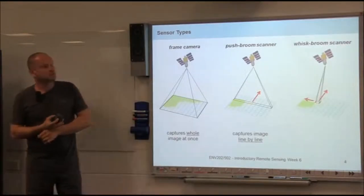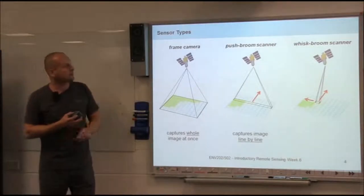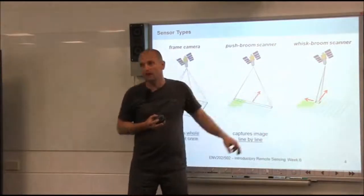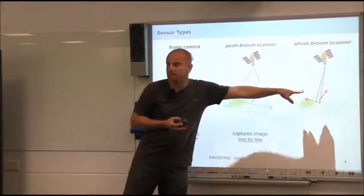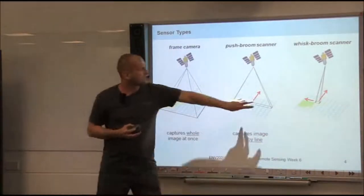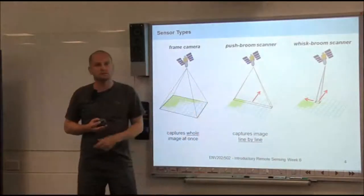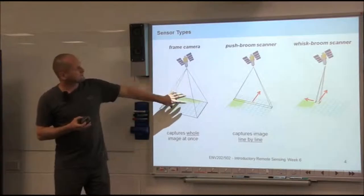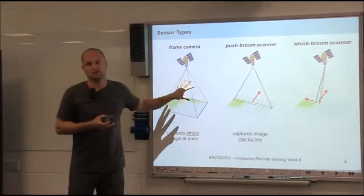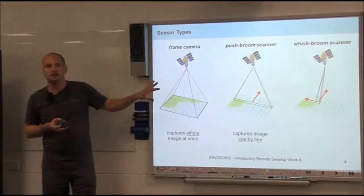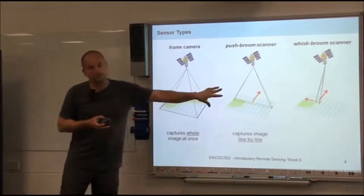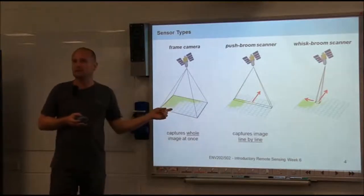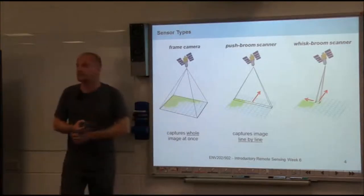And then a third variety is a whisk-broom scanner. It captures one pixel at a time and sweeps across the image, and through the forward movement of the sensor, it captures the whole image. These are the most used types of sensors in remote sensing. This type is used for digital aerial photography, although things are moving towards the other sensor systems.